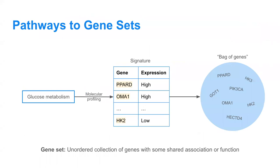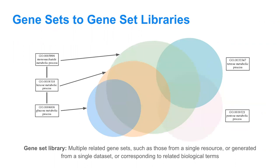From omics profiling studies and signatures, you can create gene sets, which are generally conceptualized as a bag of genes — an unordered collection of genes with some shared association or function. For example, if we're studying glucose metabolism, we run our profiling assay, generate a signature with highly and lowly expressed genes, and can create a gene set including those genes. We could also create two separate gene sets for the highly and lowly expressed genes separately. A gene set library is a collection of multiple related gene sets from a single resource or corresponding to related biological terms.